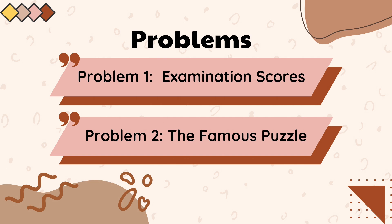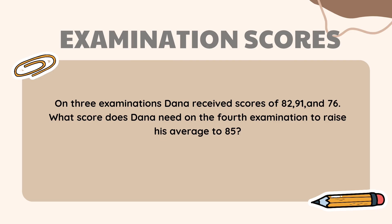We are now going to proceed in answering problem number one, which is the examination scores. On three examinations, Dana receives scores of 82, 91, and 76. What does Dana need on the fourth examination to raise his average to 85?